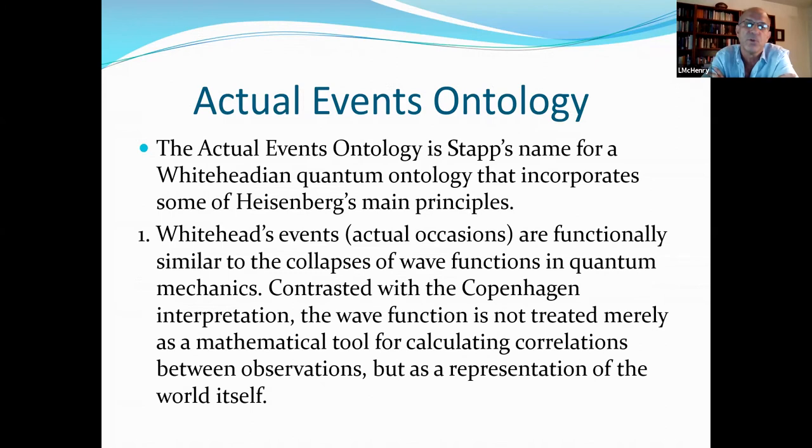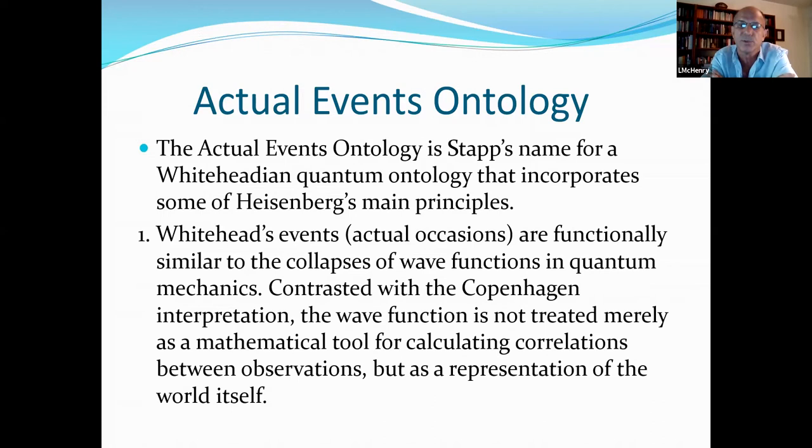So, the actual events ontology is Stapp's name for the Whiteheadian quantum ontology that incorporates some of Heisenberg's main principles. Whitehead's events, or actual occasions as he calls them, are functionally similar to the collapses of the wave functions in the quantum mechanics. Contrasted with the Copenhagen interpretation, the wave function is not treated merely as a mathematical tool for calculating correlations between observations, but is a representation of the world itself. Okay, so there's the robust realism.